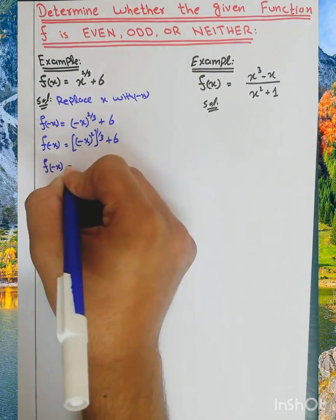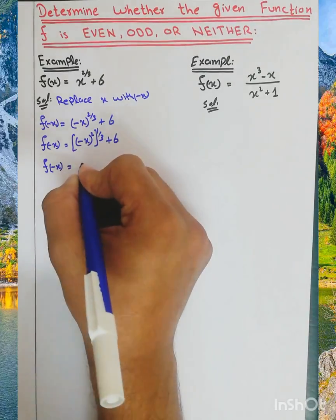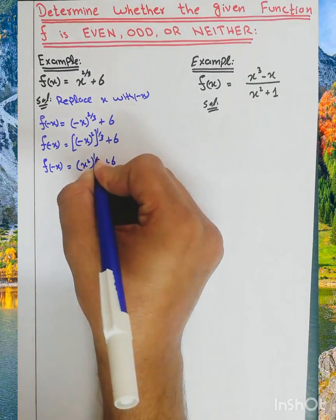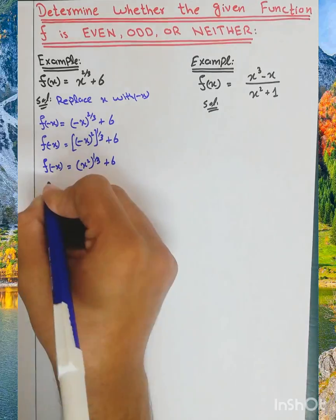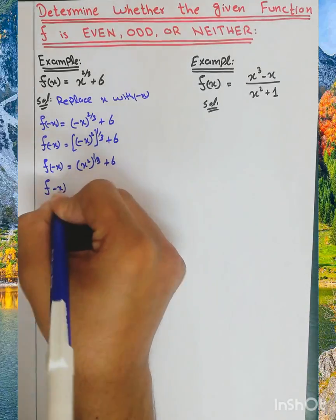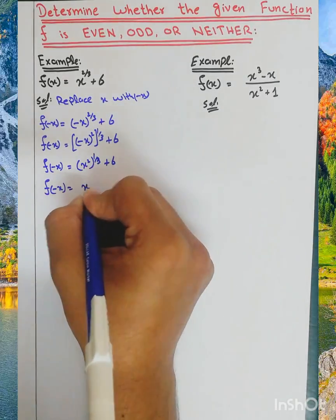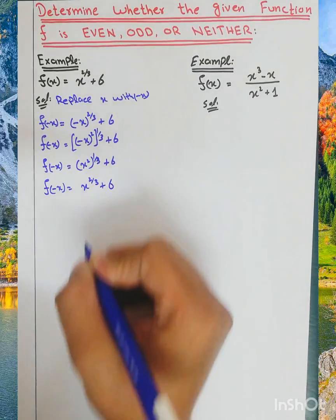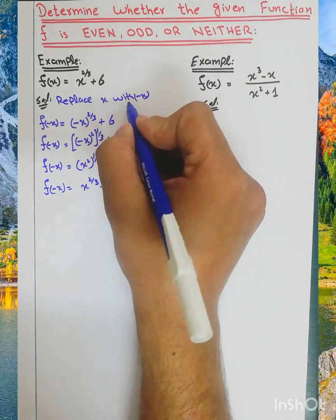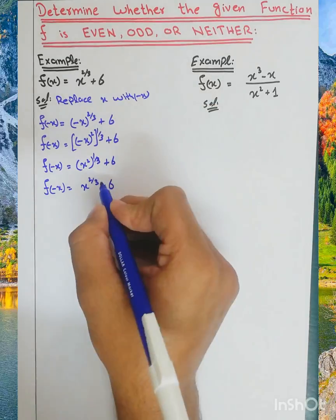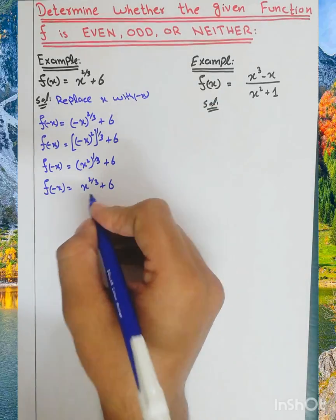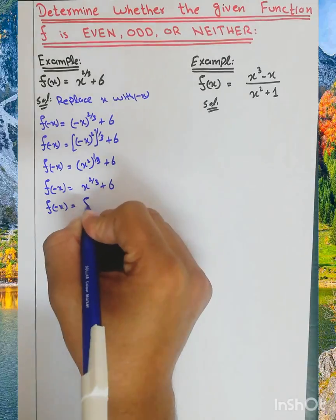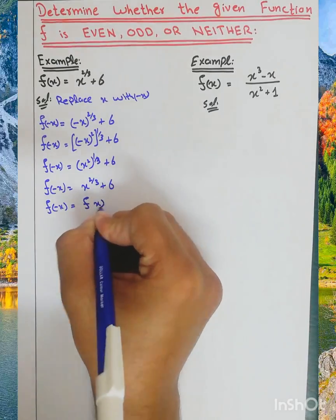f of minus x is equal to x squared to the power 1/3 plus 6, which gives us f of minus x equal to x to the power 2/3 plus 6. We have replaced x with minus x, and the final result is that f of minus x is equal to f of x.